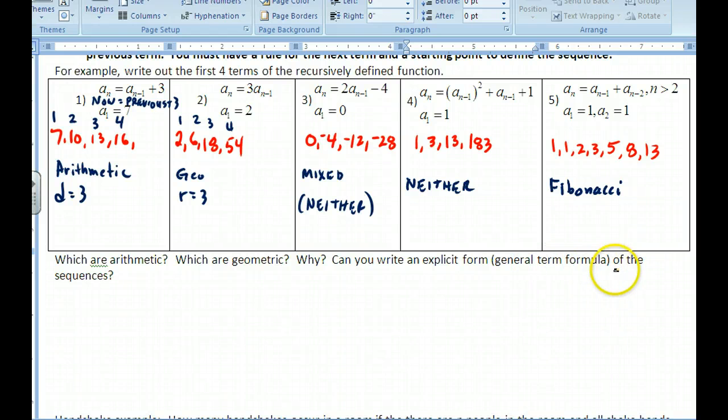Now, can we write an explicit for each one of these? Well, for 1 and 2, we can. We know how to do that. For 1, since it's arithmetic, explicit formula is a_n = a_1 + (n-1)d. And so with a_n, any term is equal to the first term, which is 7. And then I'm just going to jump by n minus 1 steps with my difference, which would be 3. So there would be my general formula. You can simplify that as well. But that is my general formula for an arithmetic.